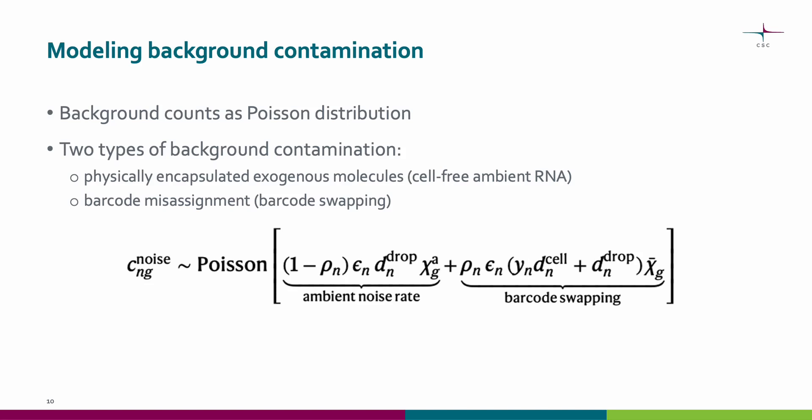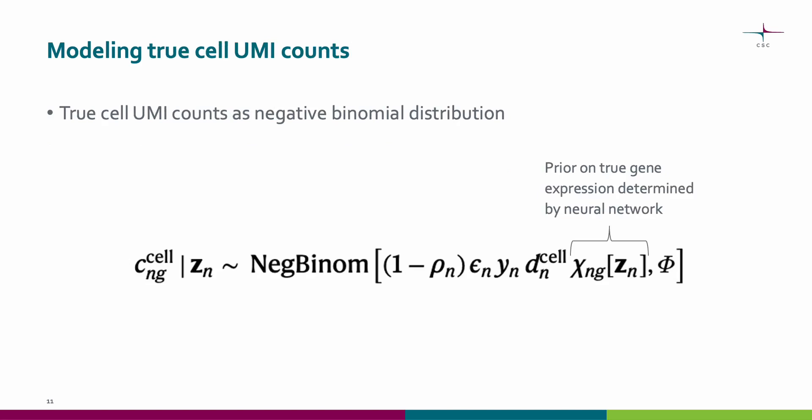These two different processes could lead to two different types of background profiles. If the source of contamination is cell-free ambient RNA, each droplet should contain a small sample of this ambient RNA background profile. However, if the source of contamination is related to barcode swapping, swapping events occur at random, and it would be expected that the background profile related to barcode swapping would be exactly the average of all of the RNA sequenced in the experiment. The true UMI counts for each cell are modeled as a negative binomial distribution where the rate depends on several parameters, including a prior on true gene expression rate. A neural network is used to learn a droplet-specific latent variable that determines this flexible prior.